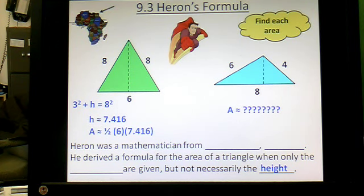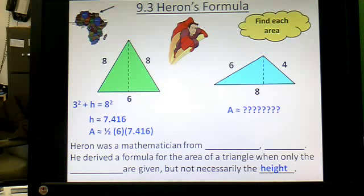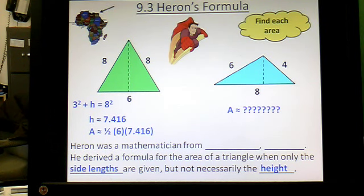He was from Egypt. And he came up with this formula that doesn't require knowing the height of a triangle. So, you don't have to use one half base times height. You can just know this side length, this side length, and this side length. Know the three sides, and you can find the area of the triangle. Completely independent of height. Height will not matter at all.